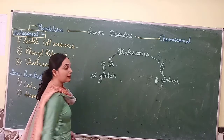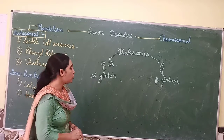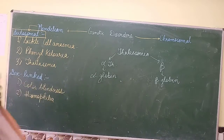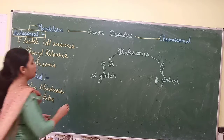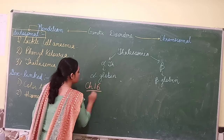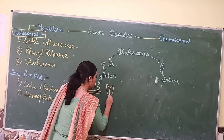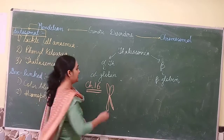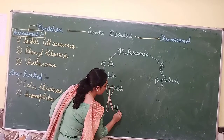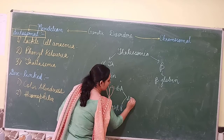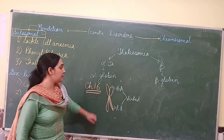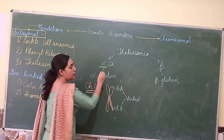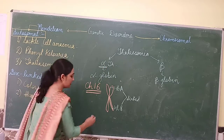In the case of alpha thalassemia, there is a gene on chromosome number 16. The genes HbA and HbB are linked genes on chromosome 16. Mutations take place on these linked genes, due to which there is no synthesis of alpha globin, and alpha globin production is decreased.